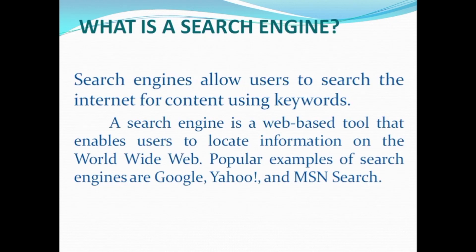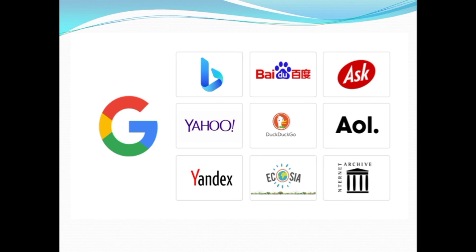The next is search engine. A search engine allows users to search the internet or the WWW for content using keywords. If a user wants to search something, they access a web browser and type search engines like www.google.com or www.yahoo.com. A search engine is a web-based tool that enables users to locate information on the World Wide Web. Popular examples of search engines are Google, Yahoo, Bing, Baidu, AOL, DuckDuckGo, and Yandex.